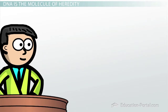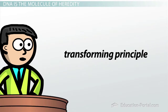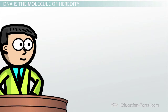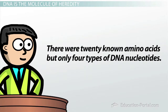Oswald Avery dubbed Griffith's mysterious substance that transformed the R-bacteria into S-bacteria as the transforming principle. He decided he and his lab would determine the identity of this substance. At the time of Avery's experiments, most scientists believed DNA to be uninteresting compared to proteins and less complex than even carbohydrates or lipids. For instance, there were 20 known amino acids, but only four types of DNA nucleotides. Surely, a molecule of such simple complexity couldn't be the molecule of heredity.